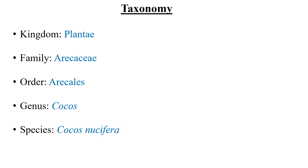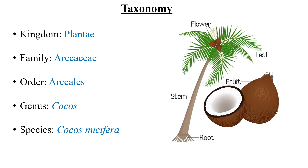The next slide is about its taxonomy. Taxonomy deals with the classification of a particular species on the basis of kingdom, family, order, genus and species. As coconut is a fruit which is a plant, it comes under the kingdom Plantae, family Arecaceae, order Arecales, genus Cocos, species Cocos nucifera. It is to be noted that the Latin name or botanical name of coconut is Cocos nucifera.